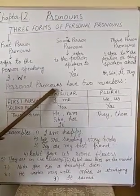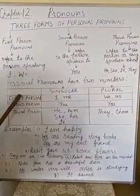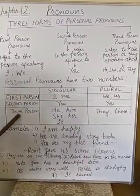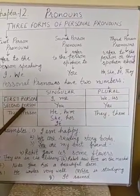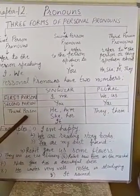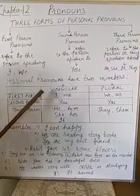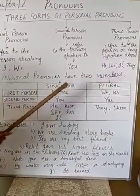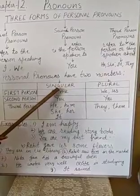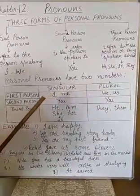Personal pronouns refer to three persons: first person, second person, and third person. These pronouns have two numbers: singular number and plural number.